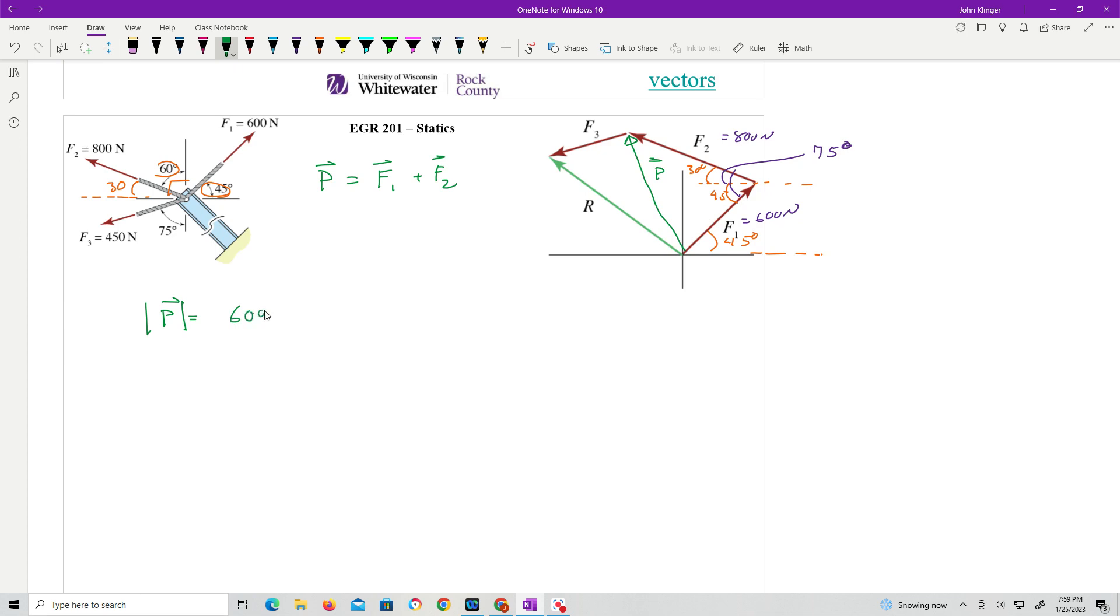All right, so we have 600 squared plus 800 newtons squared minus 2, times 600 times 800. And the cosine of the included angle is cosine of 75 degrees. And I take the square root of that. If I do, and I plug this all in, I will get 866.9 newtons. That is what p is equal to.